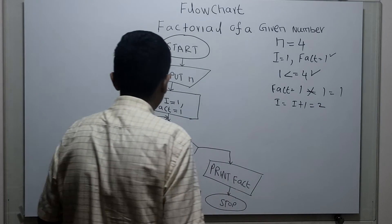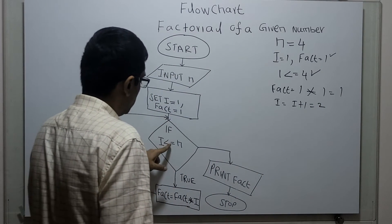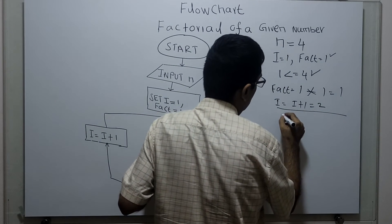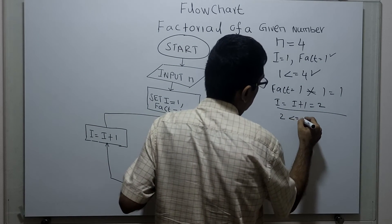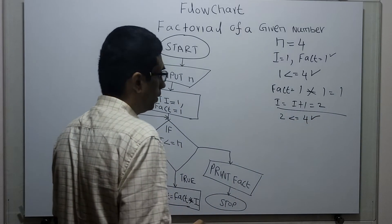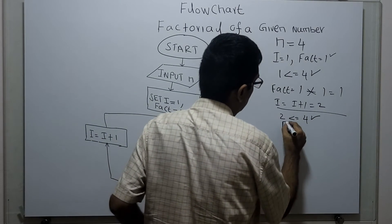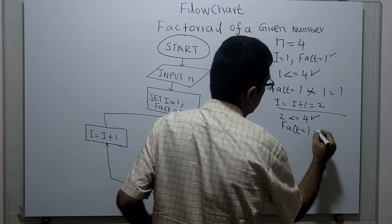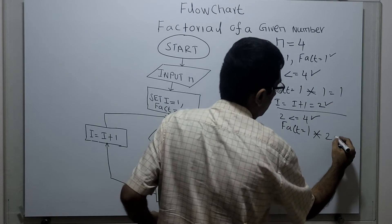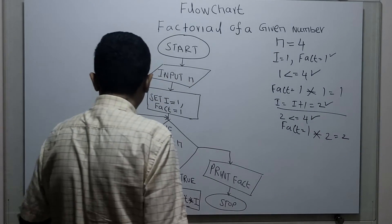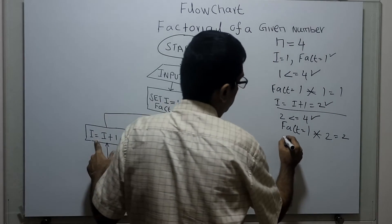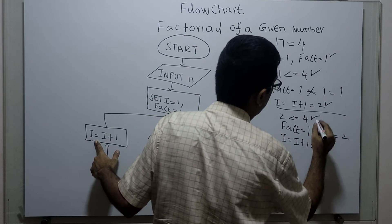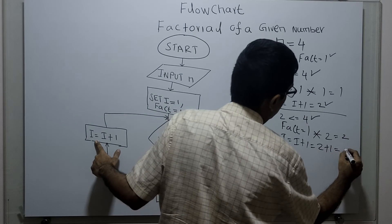Now i has come to 2. Let us check i less than or equal to n — next iteration. 2 less than or equal to 4, which is true. Fact equal to fact multiplied by i. Existing value of fact is 1, multiplied with i value which is 2, so fact equal to 2. I am incrementing i by 1 — existing value of i is 2 plus 1, which equals 3.